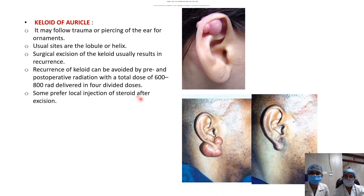Keloid of the auricle is very commonly seen in females and sometimes in males, occurring because of trauma or ear piercing. Usual sites are the lobule or helix. Treatment is surgical excision, but due to its typical tendency to recur, add-on therapy is given in the form of local steroid injections or radiotherapy after excision.